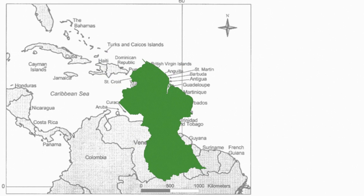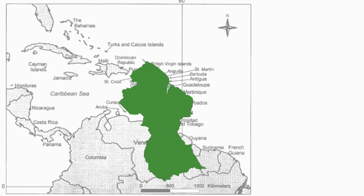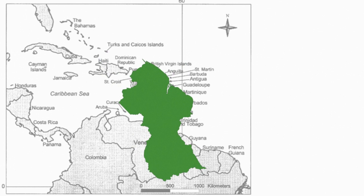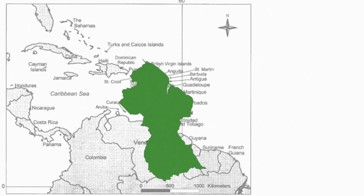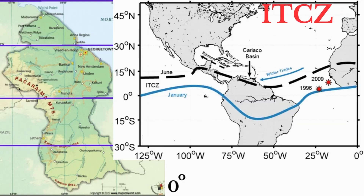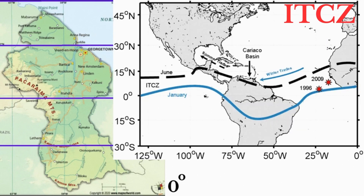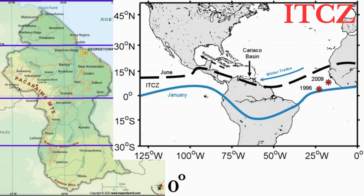One place in the Caribbean where forest resources exist is Guyana. Guyana is located in the northern region of South America between Venezuela and Suriname. It is one of the mainland territories of the Caribbean. Guyana is situated between latitudes one and nine degrees north of the equator, so a large part of the country experiences equatorial climate, with high temperatures and heavy convectional rainfall throughout the year.